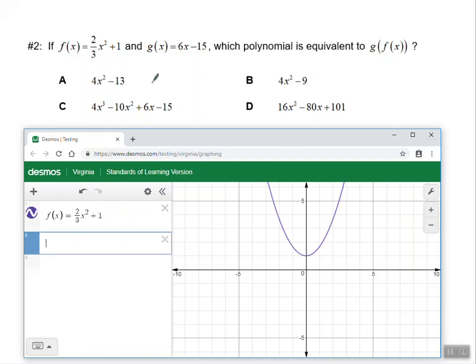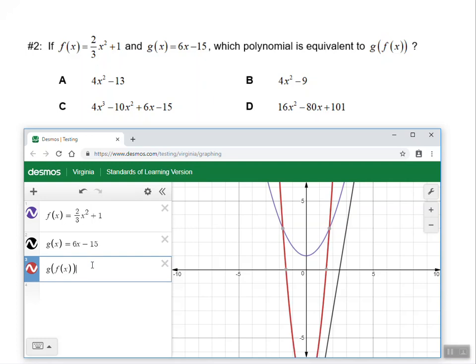And let's see what g of x looks like. g of x is equal to 6x minus 15. Okay. So we've defined f of x and g of x, and I'm interested in this one. Now look at the order. It's g of f of x. So I'm going to type in g of f of x. I'm going to close my parentheses.